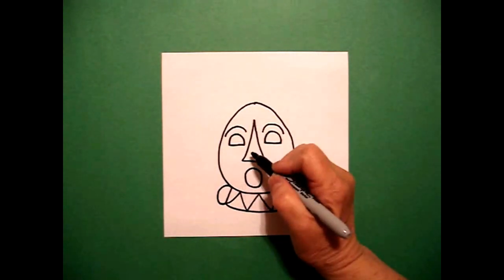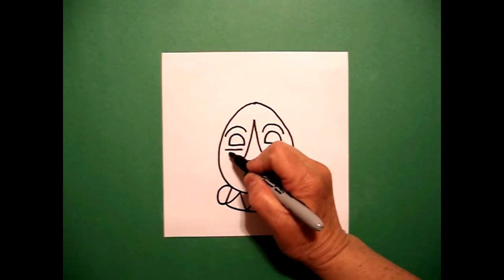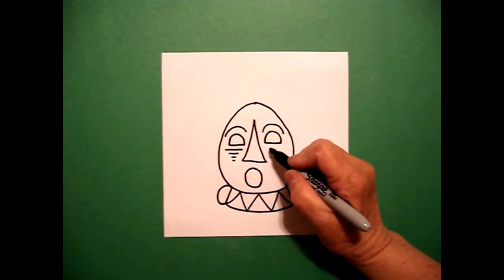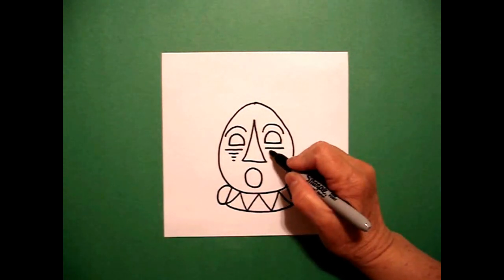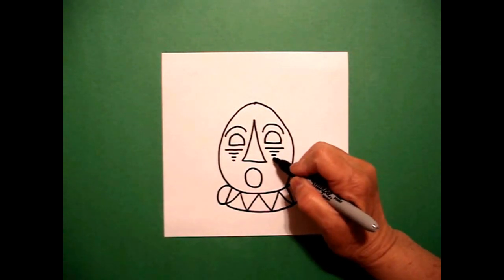I come over to the left and I draw one straight line, two, three, four. On the right hand side I draw one straight line, two, three, four.